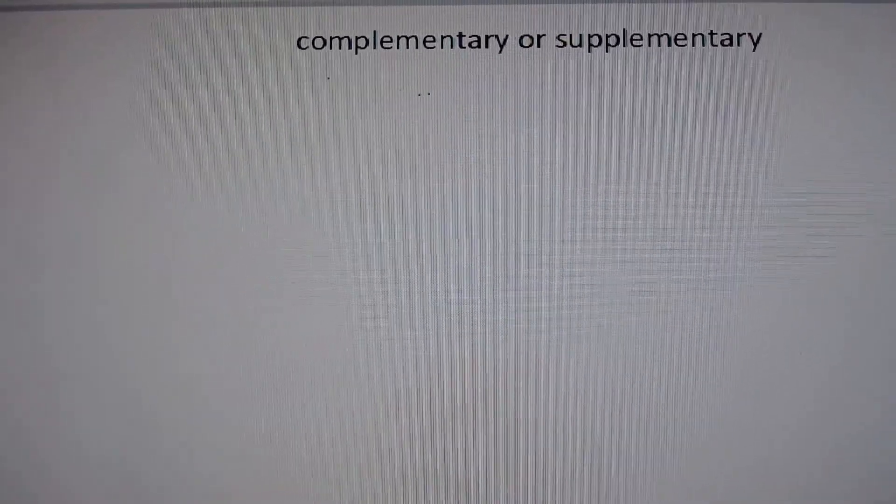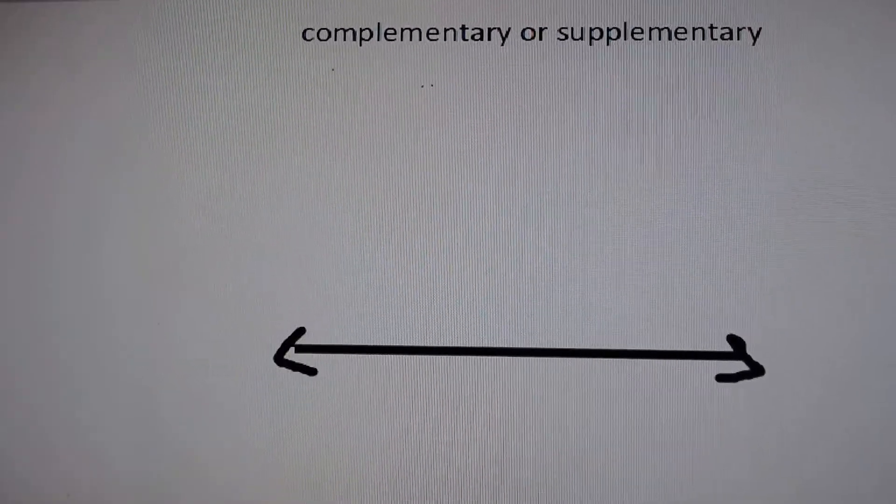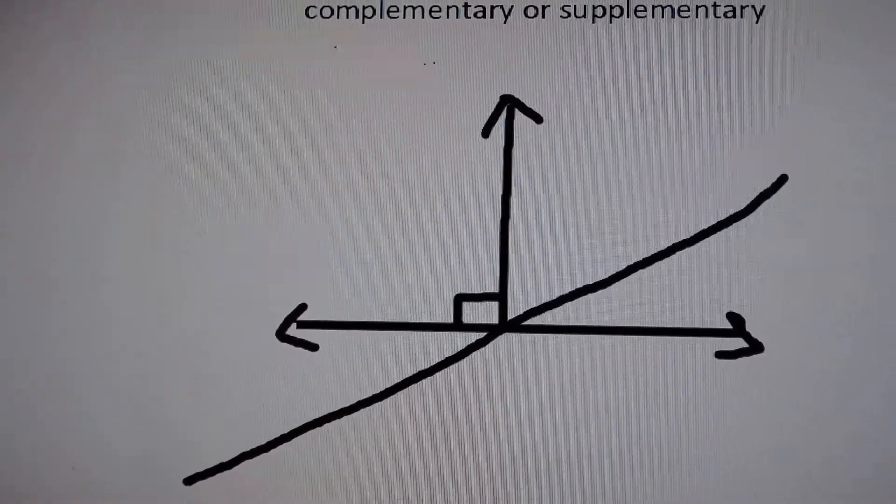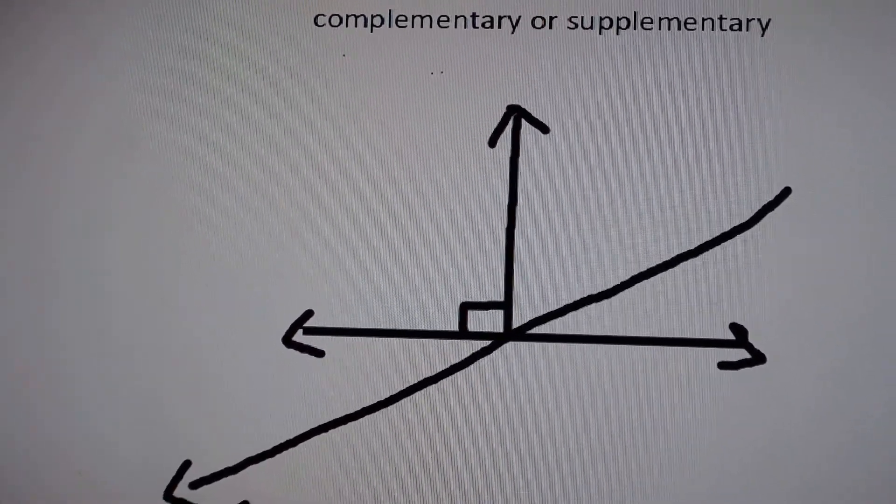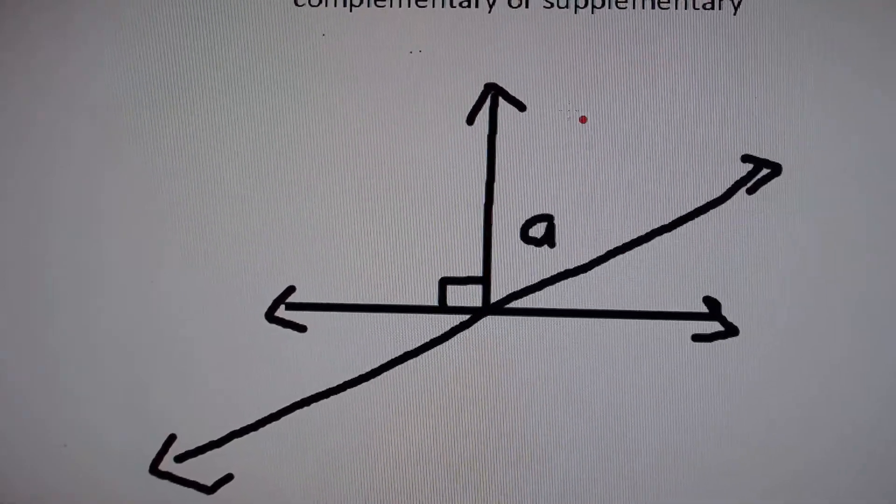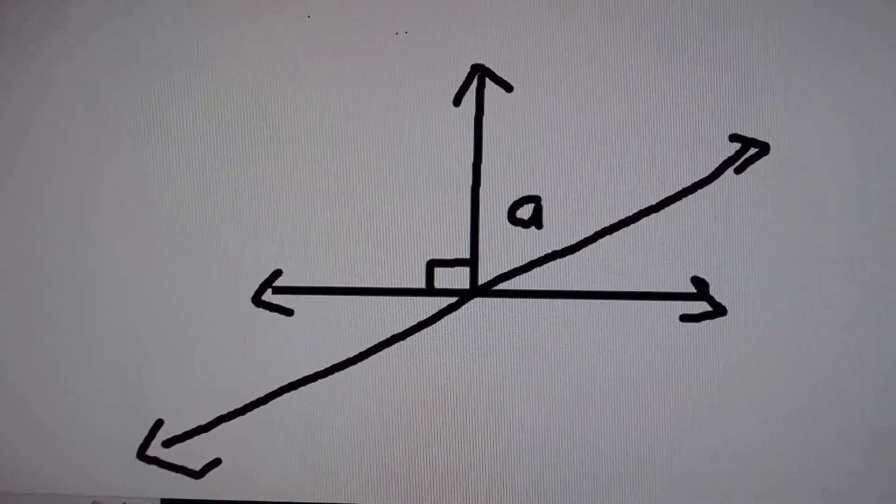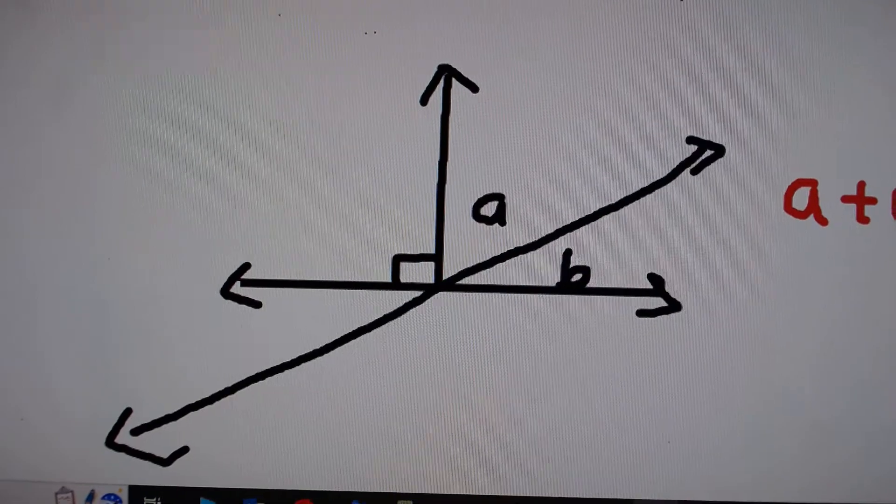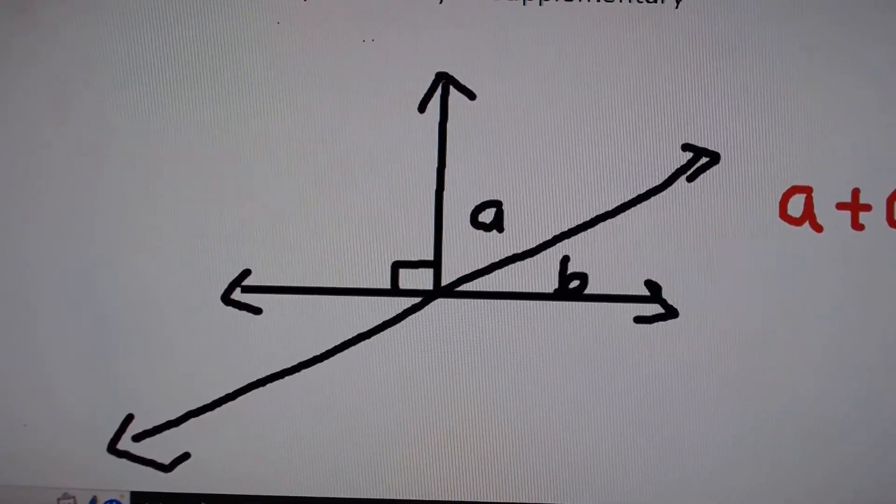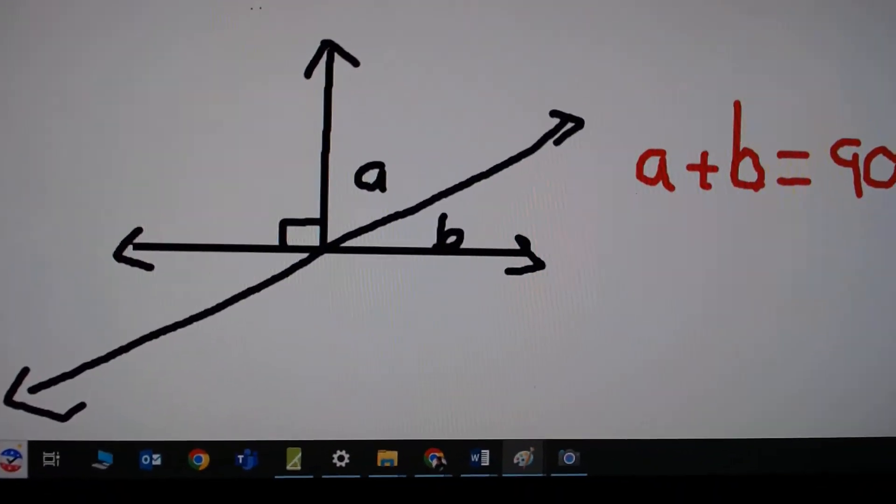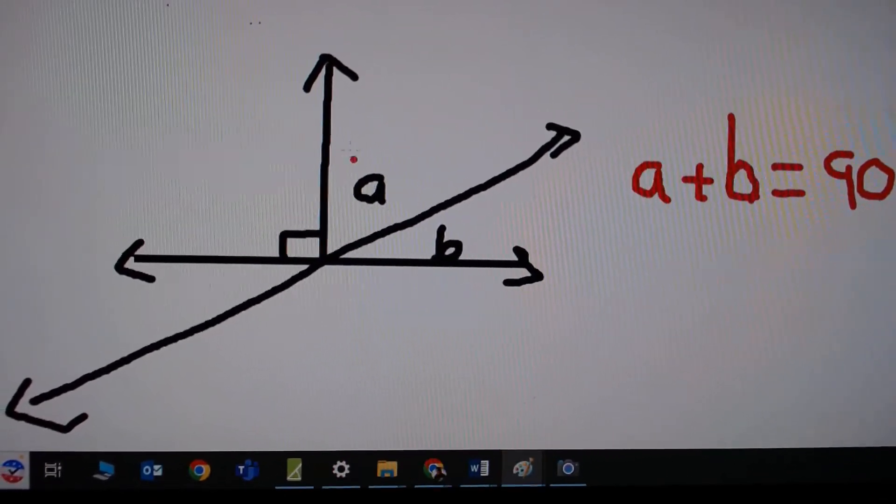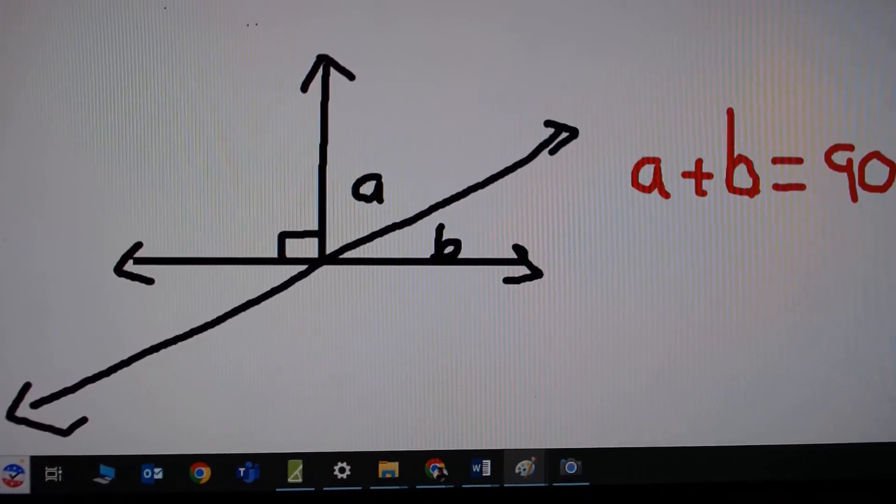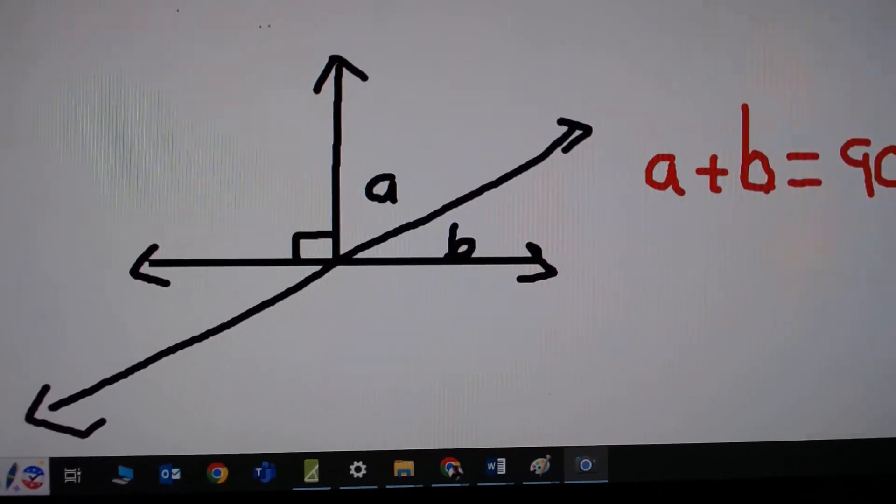Let's do an example. I'm going to draw a line and create an angle. This is a right angle. Let's look at angle A and angle B. If I add angle A to angle B, the sum would be 90 degrees. So angle A plus angle B equals 90 degrees. This makes it a complementary angle.